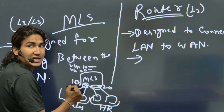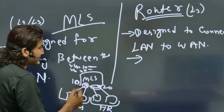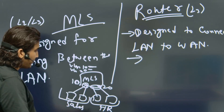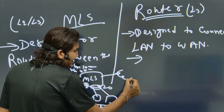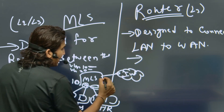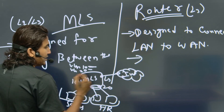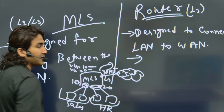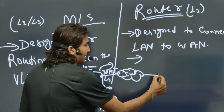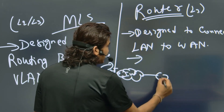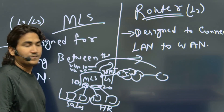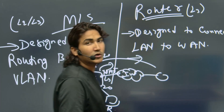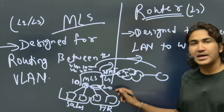The VLAN 10 interface IP becomes the gateway for Sales and VLAN 20 interface IP becomes the gateway for HR. For internet access, the uplink port is configured as an L3 port, a default route is set toward the ISP, and NAT is enabled. In the future, a VPN can also be configured if the switch supports it.